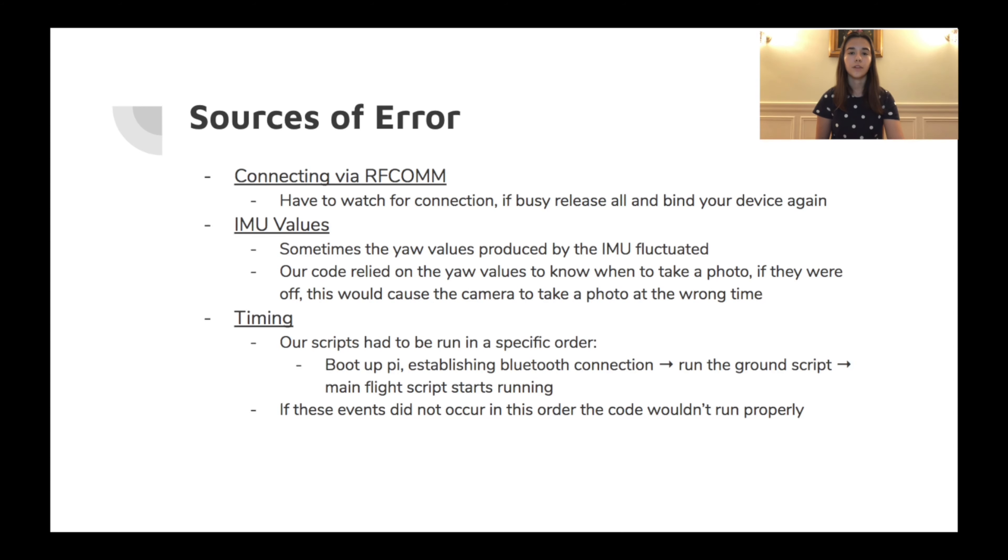Another potential source of error for us was our IMU values. We used the yaw values from the IMU to determine when to take an image in our orbit. However, through testing, we discovered that some team members' yaw values fluctuated. This meant that the camera would take an image at the wrong time, potentially missing the poster board completely.